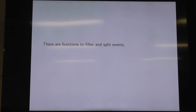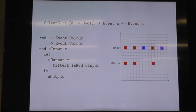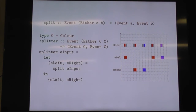There are functions to filter and split events as well. Filtering will give the same logical points in time, but possibly fewer of them. So we can filter to just have the red events — the outputs are just the red ones with filterE. And we can split: if we have an event of Either A or B, we can split into left and right and end up with two outputs where the left ones correspond to Left values and the right ones to Right.